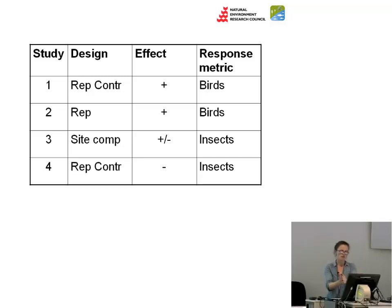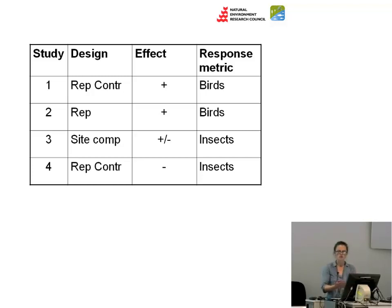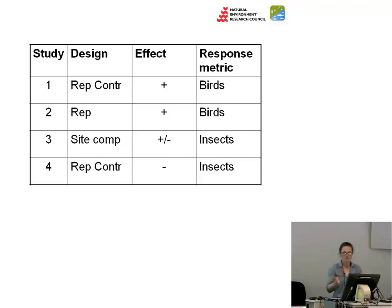From the table you can say, for this intervention, what seems to be the case is that it works for birds but not so consistently for insects, because you have two replicated controlled trials finding a positive effect for birds, while one replicated controlled study finds a negative effect for insects and one site comparison study finds a mixed effect. We're not making a judgement — we're just presenting the evidence. So you'd say: there have been four trials; two, both replicated, find benefits for birds; one finds a decline in insects. You can see how difficult it is to do this.